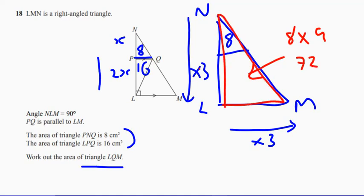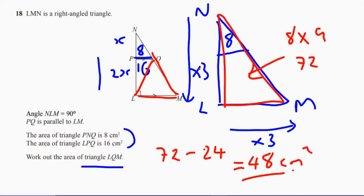Remember, that's not the question. The question is, what's the area of this triangle? So it will be 72 take away the 2 that we already know, the 8 and the 16. So 8 add 16 is 24. So the answer to that, 72 take away 24 will give us 48 centimeters squared.